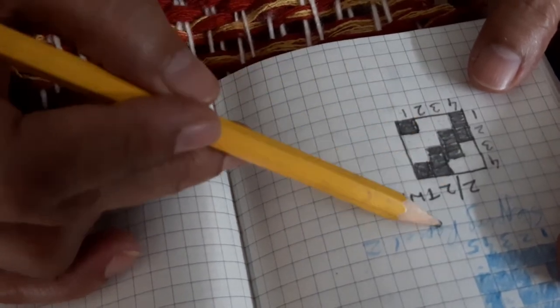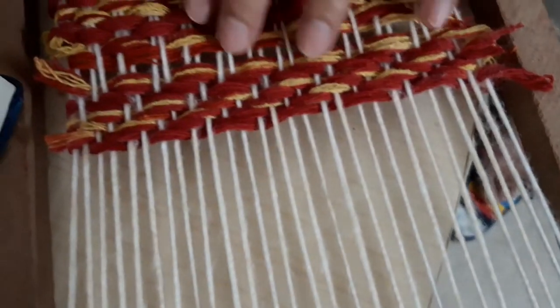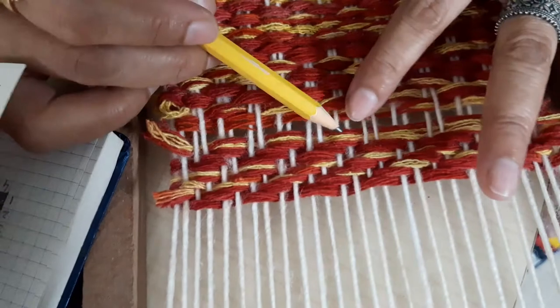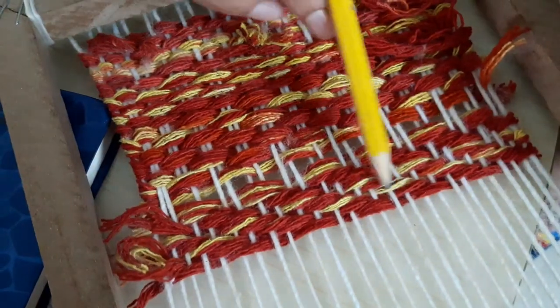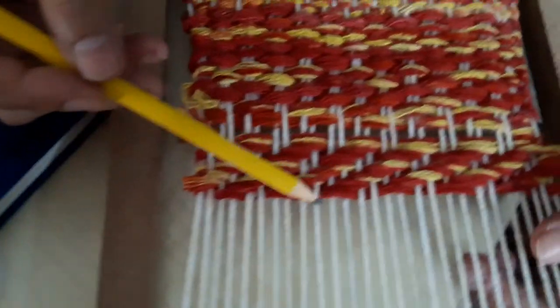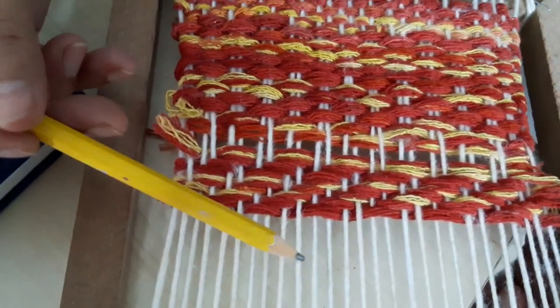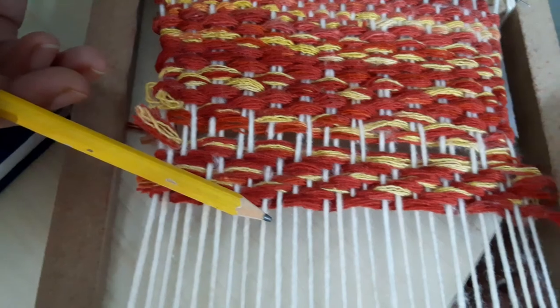Now can you see the diagonal lines coming? This is an even face twill. Even if you see the back side, the same number of yarns. The moment you make an uneven face twill, three up one down, that will be more prominent here and less prominent on the other side. Thank you.